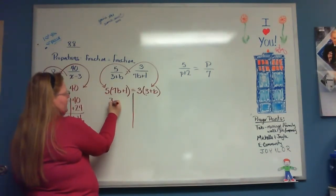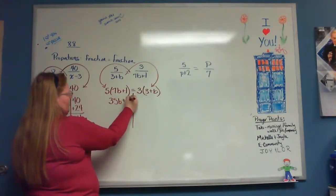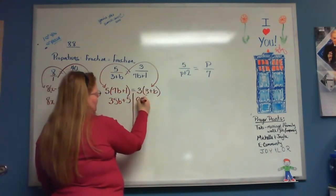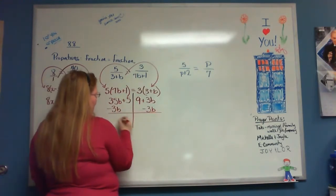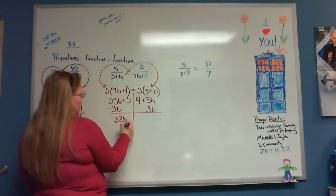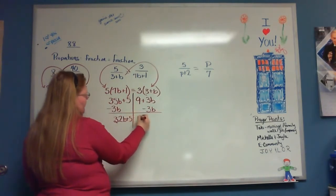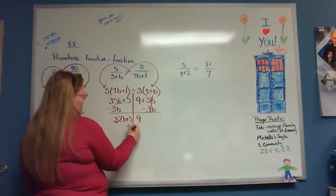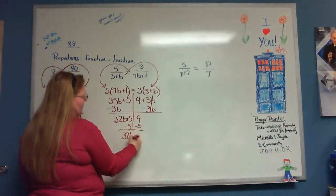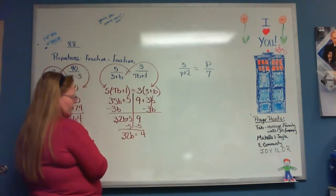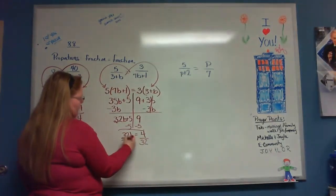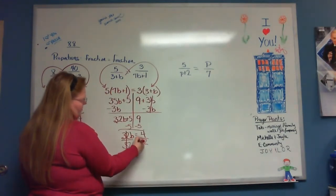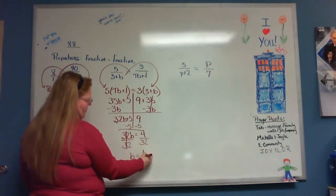5 times 7b is 35b plus 5. And then 3 times 3 is 9 plus 3b. Subtract 3b from both sides. That's 32b plus 5 is equal to 9. Subtract 5 from both sides. 32b is equal to 4. Divide both sides by 32, because that's the number in front of the letter. b is equal to 4 over 32 which reduces down to 1 over 8.